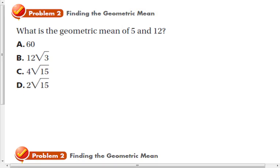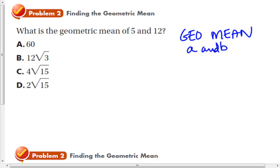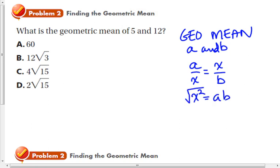From these right triangle similarity theorems, we get problems that deal with the geometric mean. The geometric mean of two numbers A and B is the number in the center of those two by multiplication. Proportionally, we write A over X equals X over B, so X squared equals A times B. Taking the square root of both sides, X equals the square root of AB. You can find a geometric mean by taking the square root of the product of the two numbers.